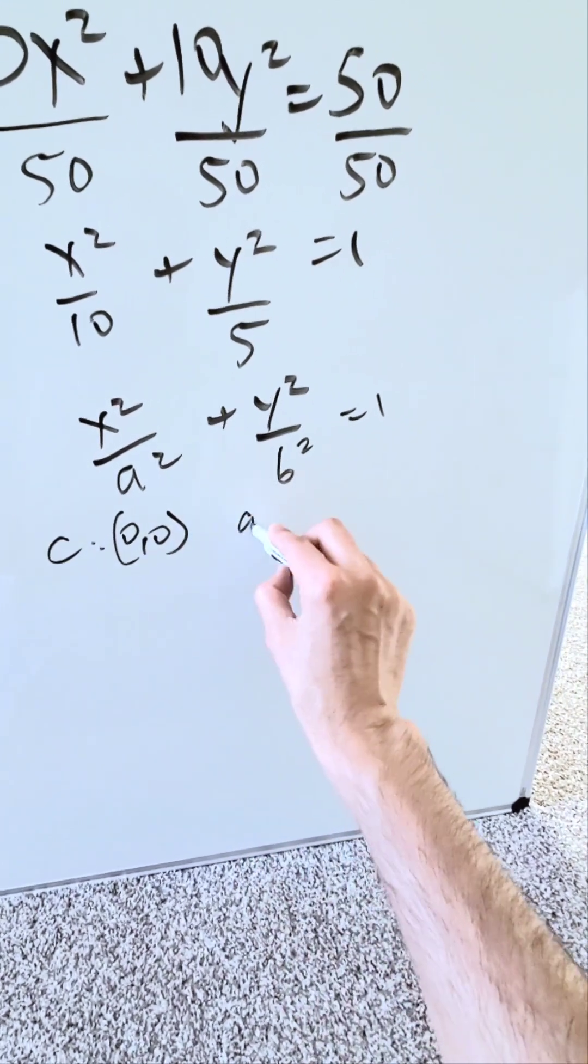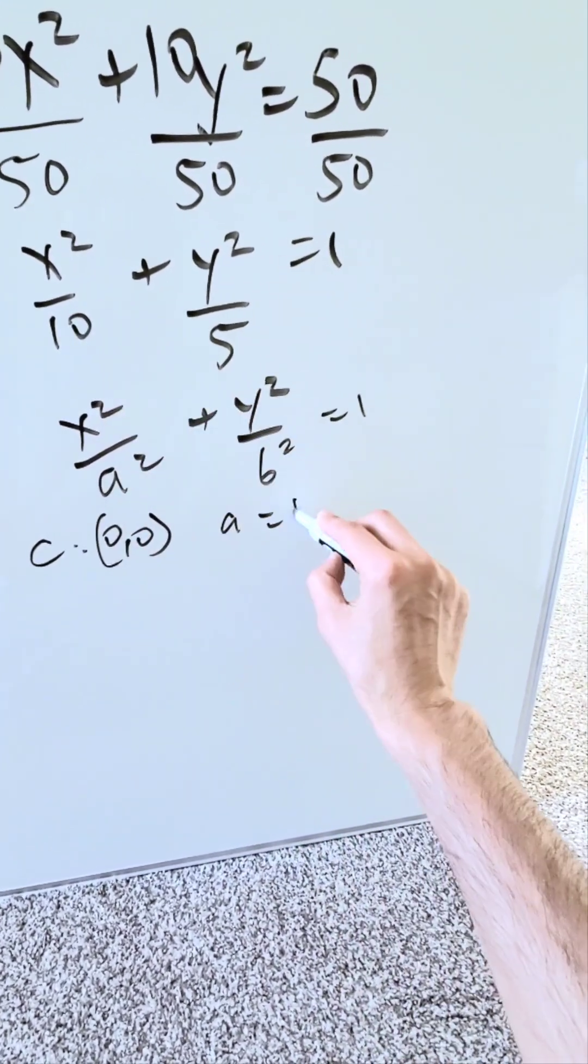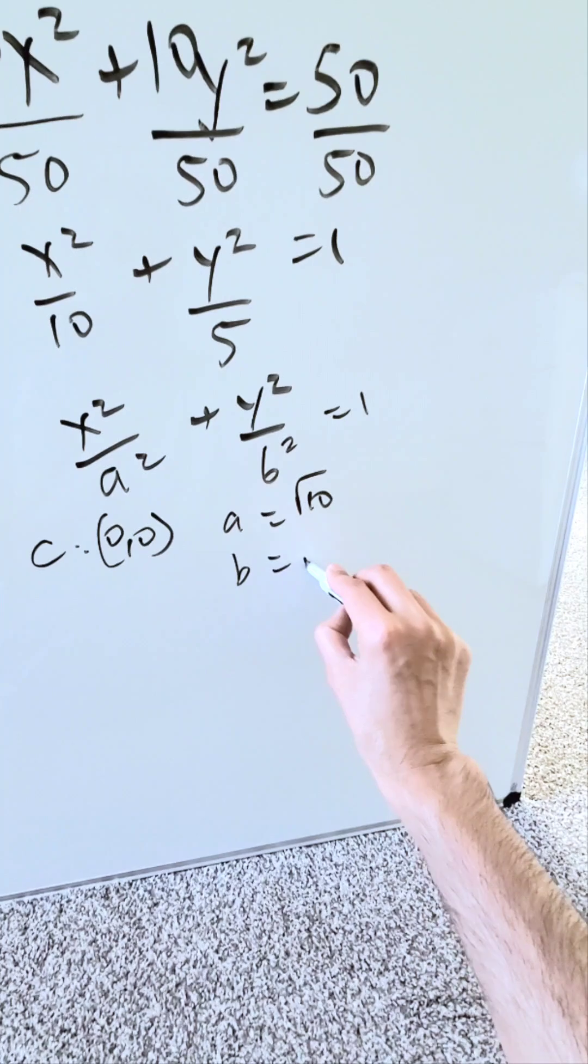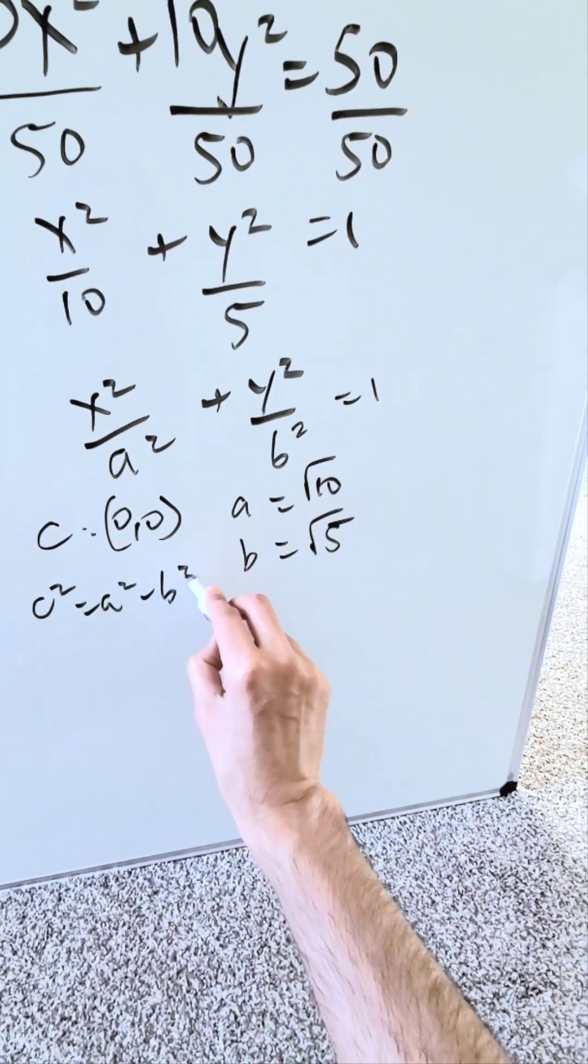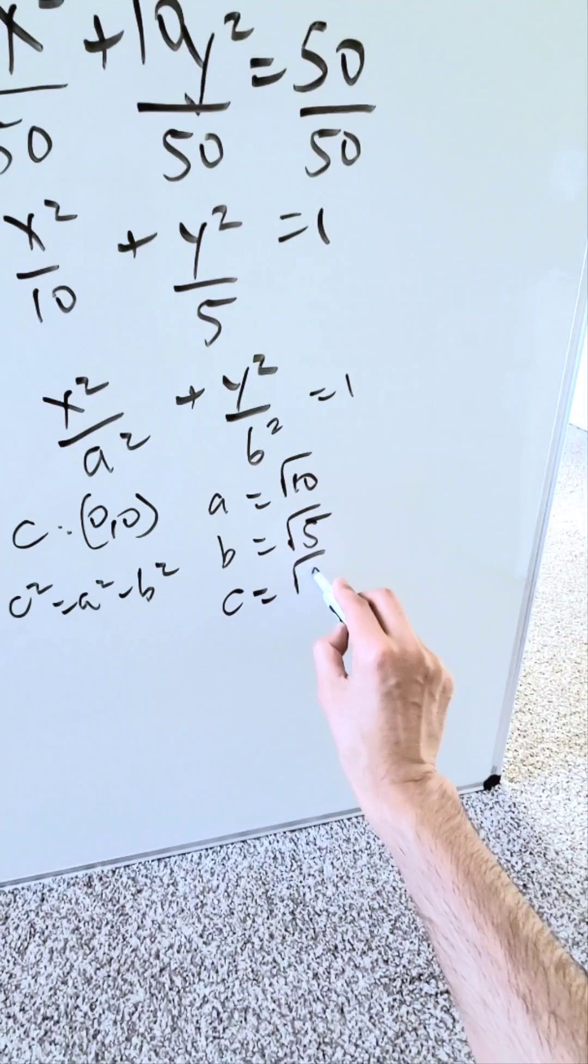Center is going to be 0, 0. A is going to be root of 10. b will be root of 5. You know for an ellipse, c squared is equal to a squared minus b squared. You solve this for c, you'll have here root 5.